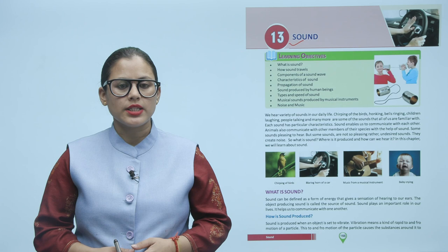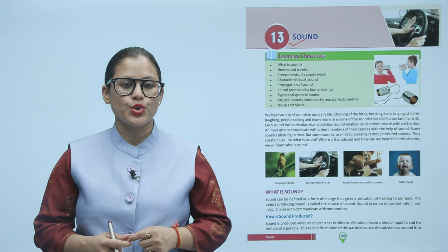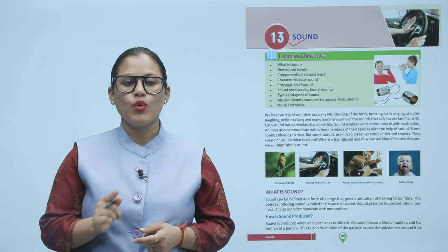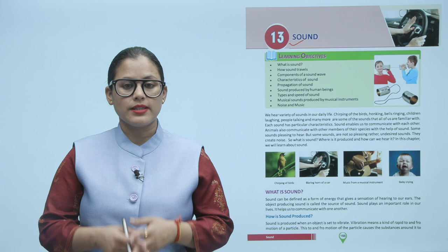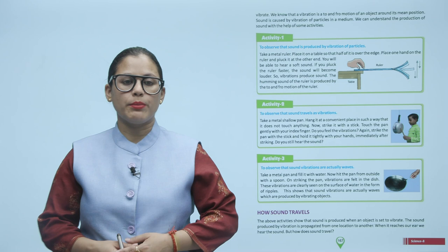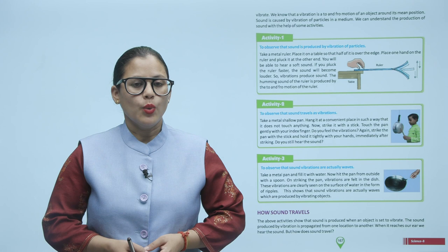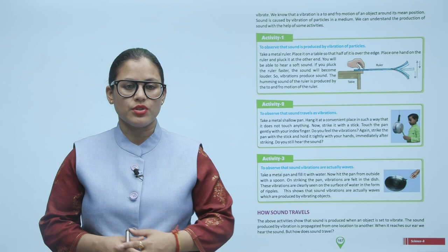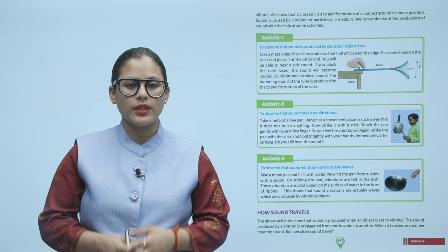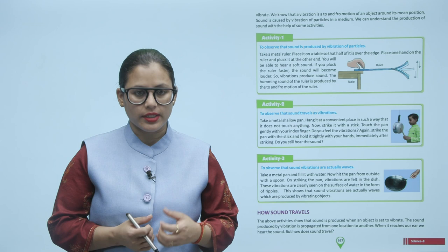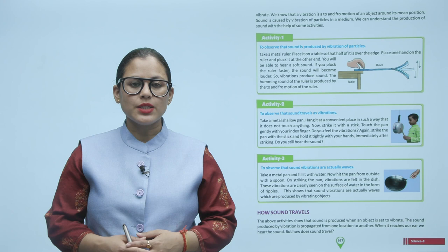How is sound produced? Sound is produced when an object is set to vibrate. Vibration means a kind of rapid to-and-fro motion of a particle. This to-and-fro motion of the particle causes the substances around it to vibrate. Sound is caused by vibration of particles in a medium. We can understand the production of sound with the help of some activities.